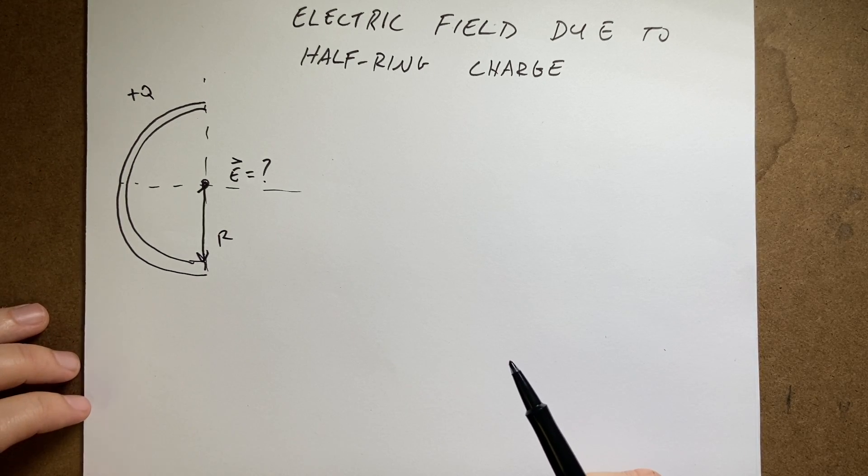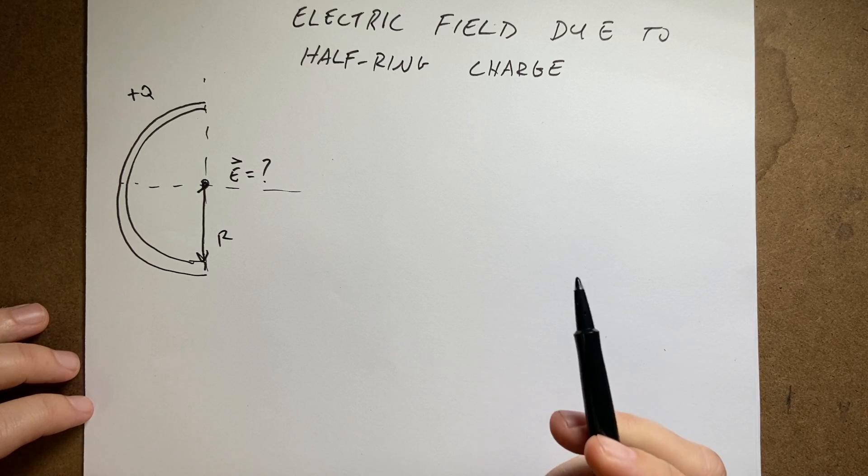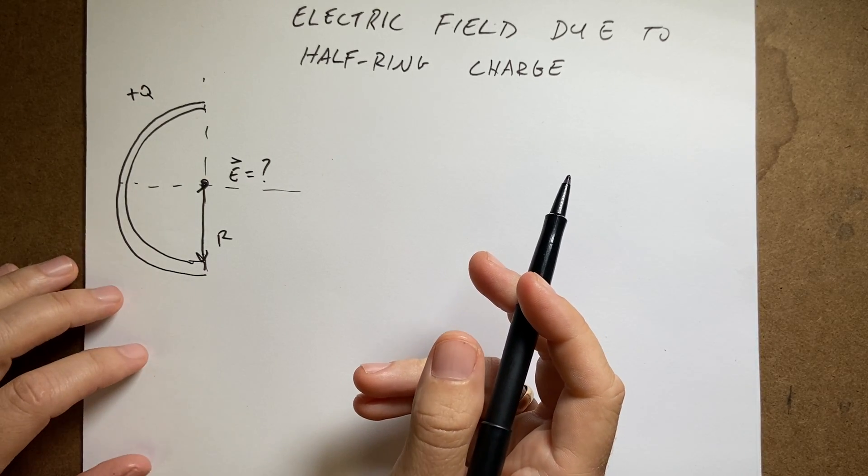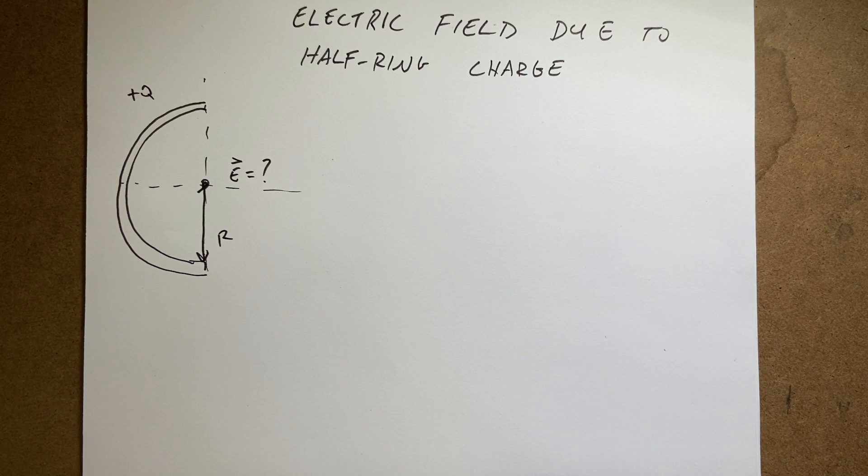Okay, so this is just for fun, right? As all physics are. In the introductory course, you do things like finding the electric field due to a long charge or rod of charge. You do a full ring. But what about a half ring?